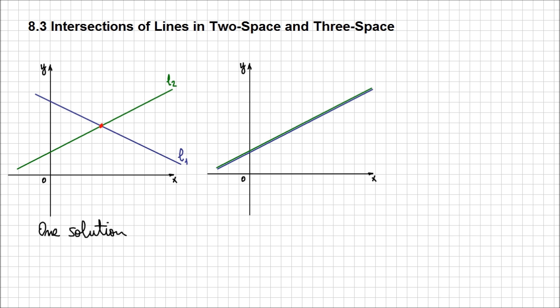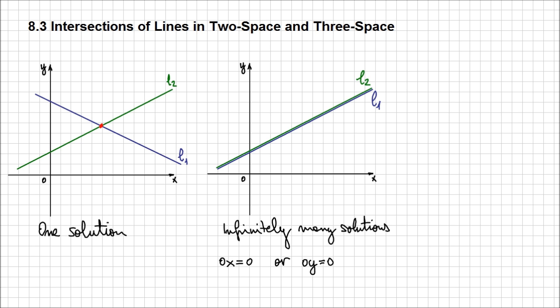Another situation is when lines L1 and L2 are coincident. In this case, you will have infinitely many solutions. When solving the system of equations, you're going to end up with something like 0x equals 0 or 0y equals 0, meaning any value of x is valid. The lines are coincident, meaning they are exactly on top of each other. I drew them with a little distance so you can distinguish the two lines.